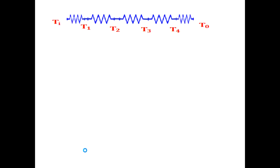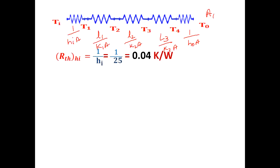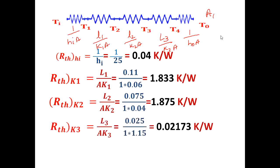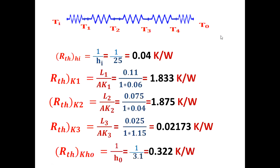The thermal resistance concept: first one is 1 by h_i A, then L1 by K1 A, L2 by K2 A, L3 by K3 A, and last one is 1 divided by h_o A. You can consider area to be 1 initially, or consider the area equal to 8 meter height into 4 meter width, which is 32 meter square.